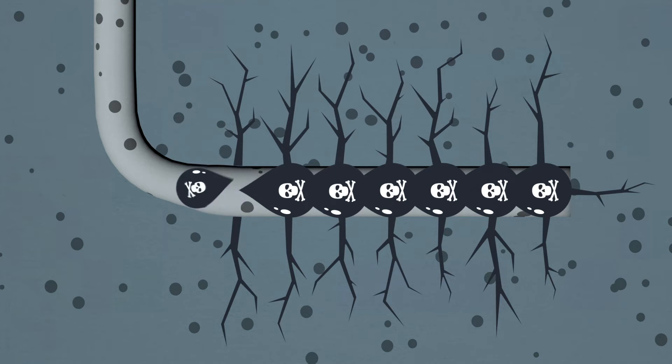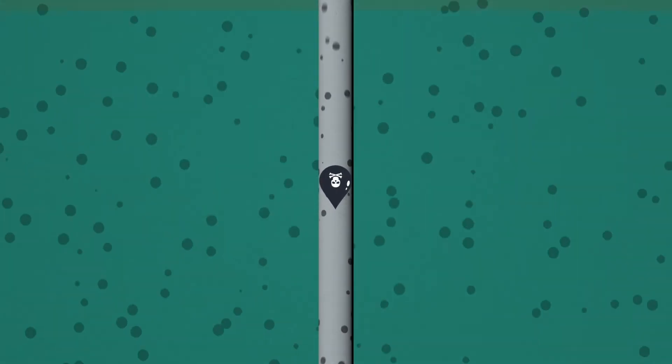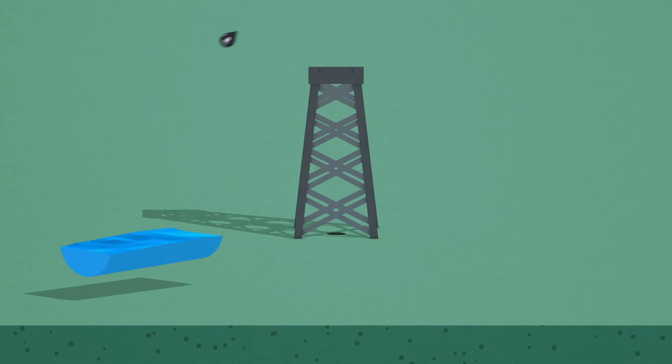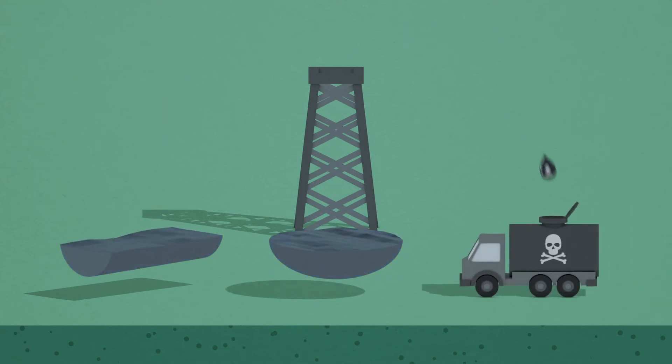Most of the fracking fluid stays underground. The fluid that comes back up is either dumped into rivers, left in open pits that contaminate the air, or hauled away by big rigs.